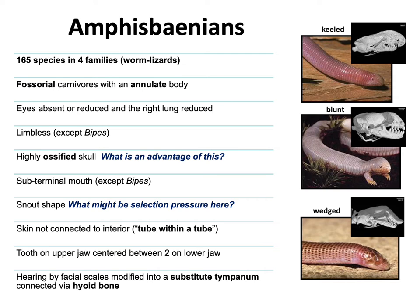The blunt-skulled ones tend to be less dedicated burrowers. Another interesting characteristic: they have a single tooth on their upper jaw that fits between two teeth on the lower jaw — an extra central incisor in the upper jaw that fits between the two lower teeth, which is unusual. Most animals have symmetrical dentition up and down, left and right. They're the exception. They can also hear by using scales on their face that function like a tympanic membrane, though they don't have a true ear.